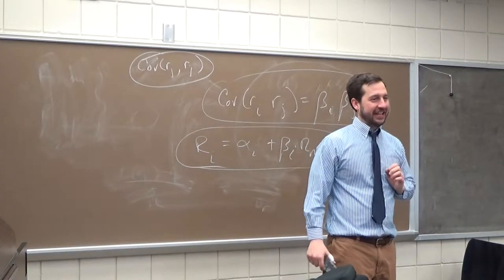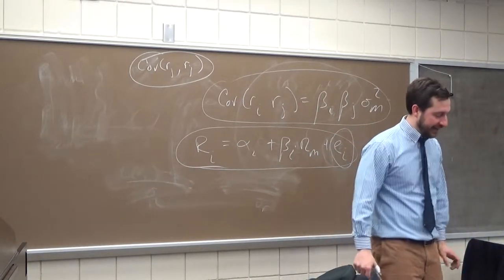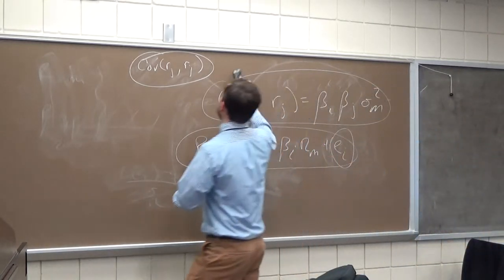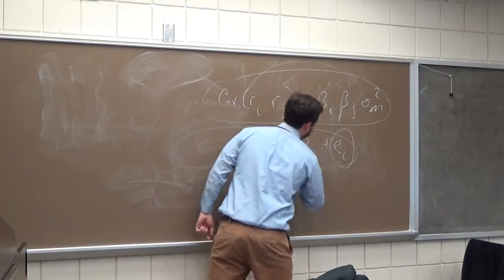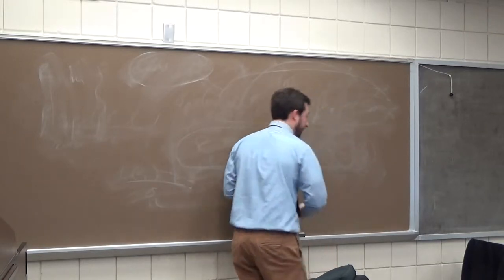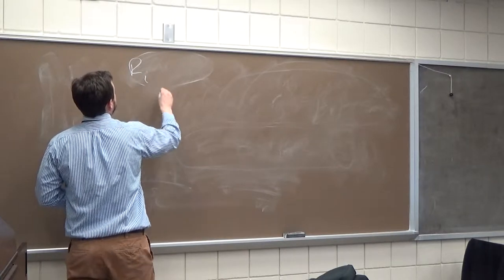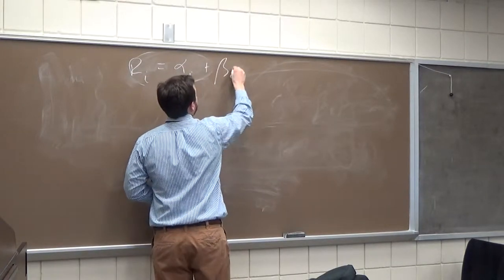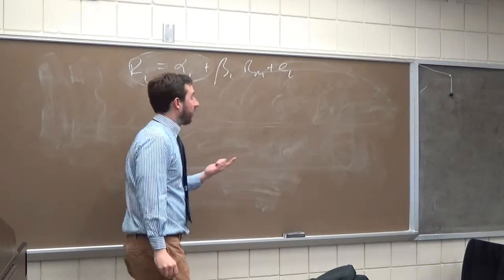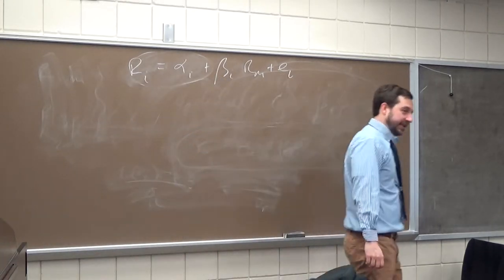The only thing I'm going to do right now quickly is show the effect of diversification on the index model — this won't take but a second. This part you can watch online since it's purely mechanical. The index model is: return on stock I equals alpha I plus beta I times the return on the market plus the error term. If we create a portfolio of stocks, what we're going to see is the error term goes away.